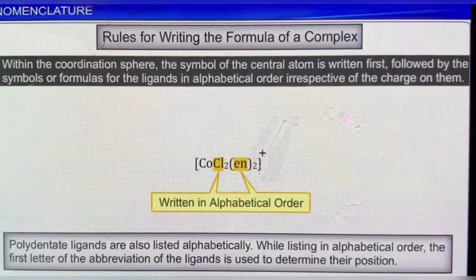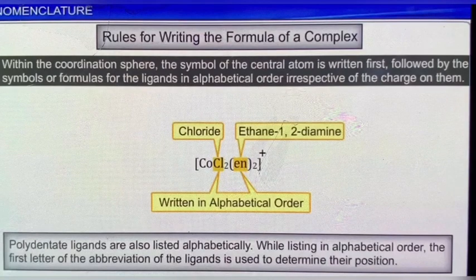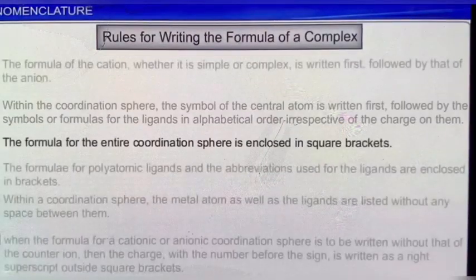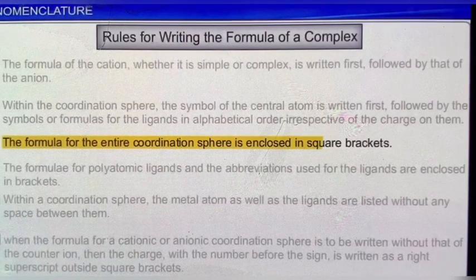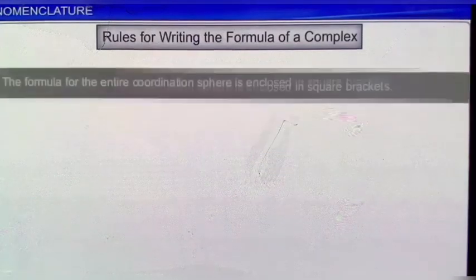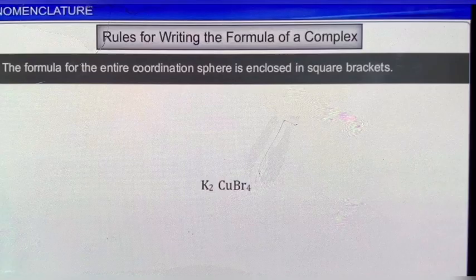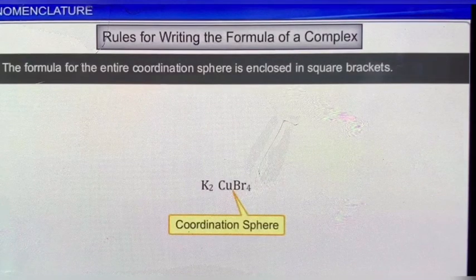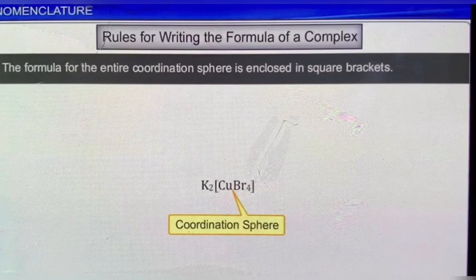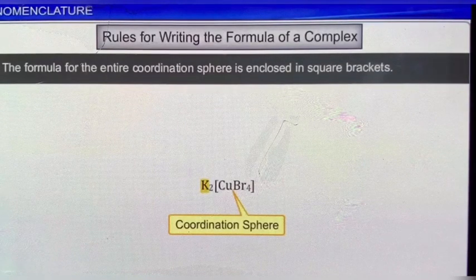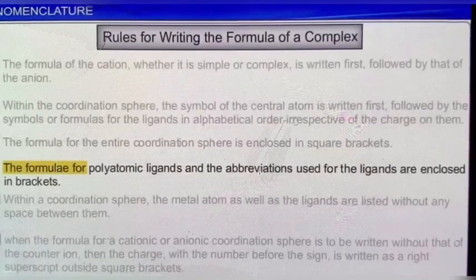Another rule is that the formula for the entire coordination sphere is enclosed in square brackets. For example, in the complex shown here, the coordination sphere containing the metal atom copper with four bromine atoms is enclosed in square brackets, while the cation potassium is written outside. The formula for polyatomic ligands and the abbreviations used for the ligands are enclosed in brackets — for example, EN, EDTA, PY, etc. are enclosed in brackets.